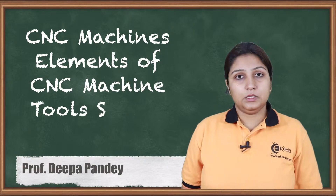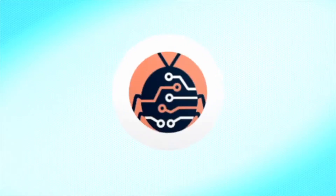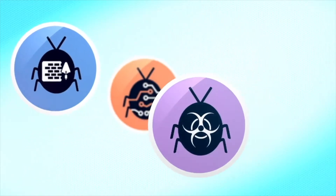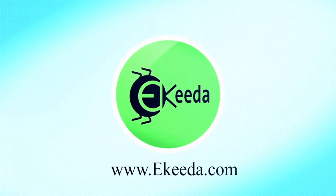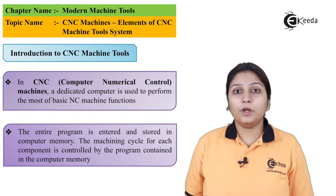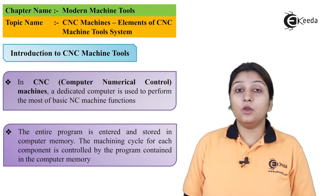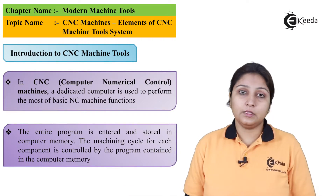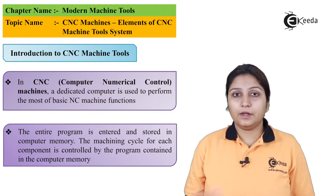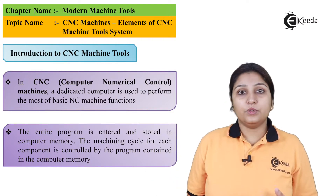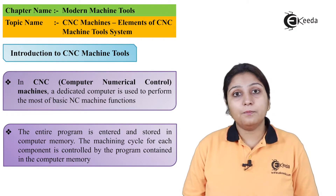Hello friends, today we are going to see CNC machines and elements of the CNC machine tool system. In CNC machining, you need a programming language which is fed to your computer, and not to the tape unlike in an NC control system. The program is directly fed and your tool is connected to your system, which is your micro controlling system, and the work is done directly from the programming to your tool.